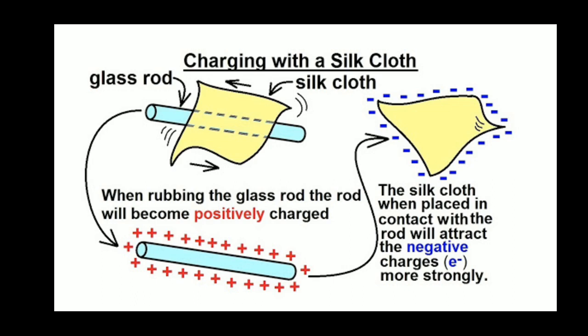When I rub one object over the other object, the electron is moving from one to the other. The ebonite rod is negatively charged because it is gaining some electrons. In this diagram, when a glass rod is rubbed over silk cloth, the glass becomes positively charged — that means the electrons are moving from the glass to the silk.